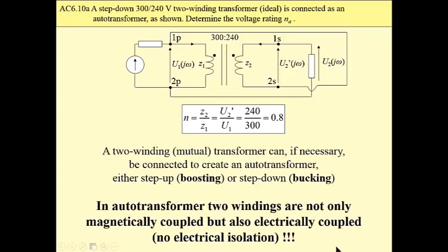One thing has to be absolutely underlined. In auto-transformers, two windings are not only magnetically coupled, but also electrically coupled, which means that there is no electrical isolation. If we create an auto-transformer using a two-winding transformer, this property of electrical isolation no more exists.